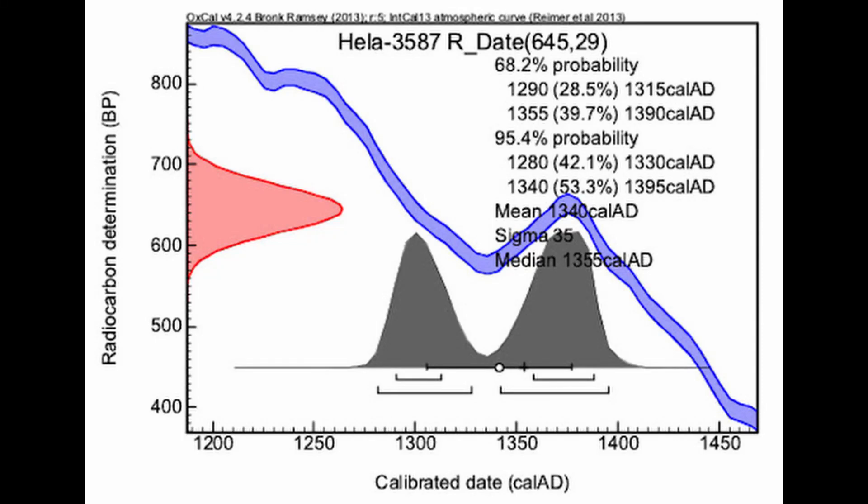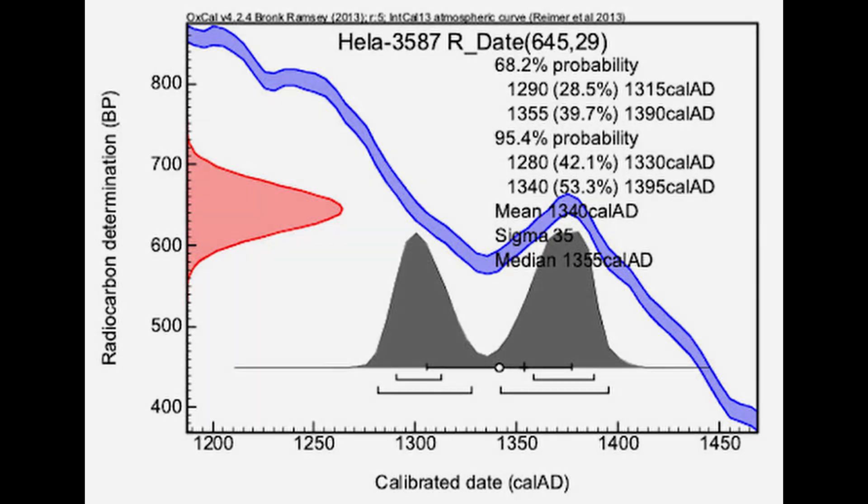We've got a whole calibration curve that is able to calculate: when our radiocarbon date comes back with this range, it really means this range in terms of actual calibrated calendar years. That's why you'll see 'cal BP' in a lot of archaeological reports, because they've had to go back and calibrate those old radiocarbon dates. We can still do this, and our calibration curves are getting more precise and accurate all the time.